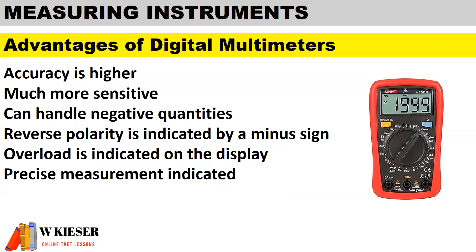Finally, we look at the digital multimeter. Compared to analog meters, digital multimeters are more accurate and more sensitive. They can handle negative quantities — reverse polarity is indicated by a minus sign, overload is indicated on the display, and precise measurement is shown on the display, meaning there is no parallax error as there would be when looking at an analog meter from an angle.